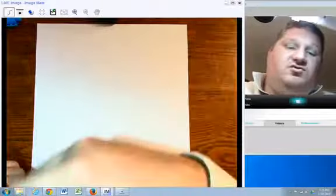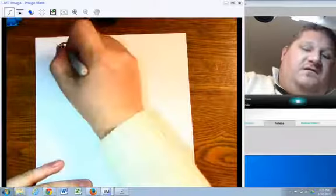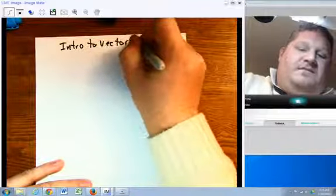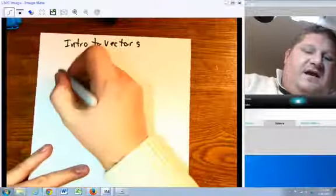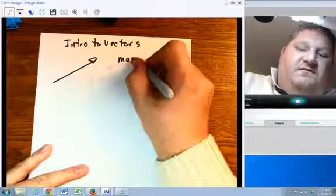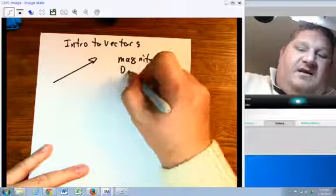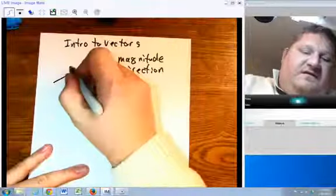Okay, our first introduction to vectors. A vector is something that has two components to it: it has both magnitude and direction. For example, if I say this is a three-inch vector, the direction would be some angle.